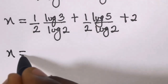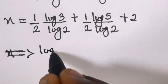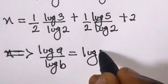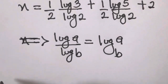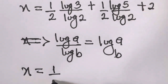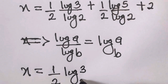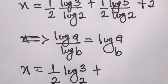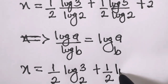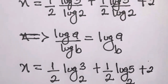Let's recall that if we have log A divided by log B, this equals log A in base B. So applying this, we have x equals 1/2 times log 3 in base 2, plus 1/2 times log 5 in base 2, plus 2. So this is your final answer, the value of x.